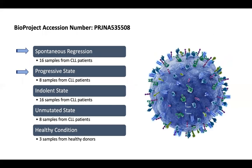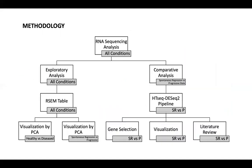Before going any deeper, let me introduce the origin of my dataset. This dataset was generated by a group of scientists and published as a bioproject in NCBI. In this study, they compared multiple samples from multiple subtypes of CLL. However, I chose spontaneous regression and progressive samples to understand the regression mechanism better. In order to reach a conclusion, I followed three main pathways: first, I explored my data using principal component analysis, which allows us to see the variability between samples. Next, I made a comparative analysis between spontaneous regression and progressive samples by focusing on differentially expressed genes, and accordingly, I interpreted my results.